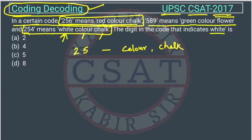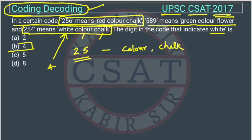What is remaining? White. So what will be coded as 4? White — because 2 and 5 are already taken. So the code for white will be 4, and the answer will be option B.